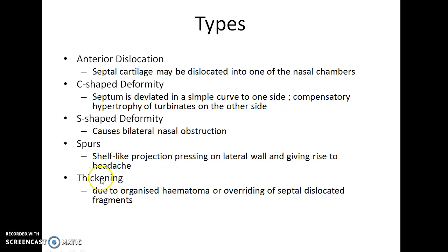Thickening is also a type of DNS. It can occur due to organized septal hematoma or overriding of dislocated septal fragments.